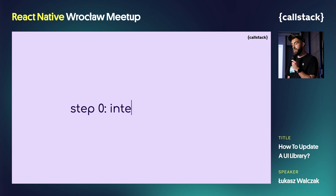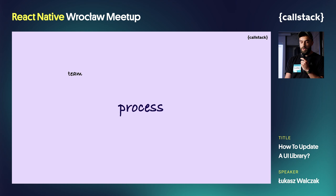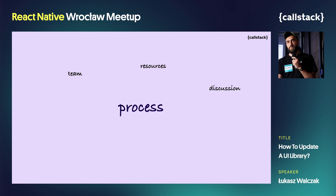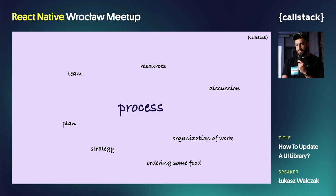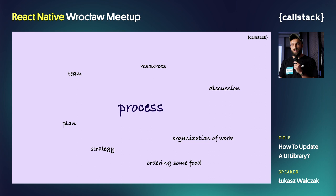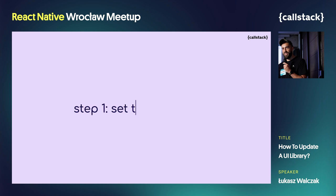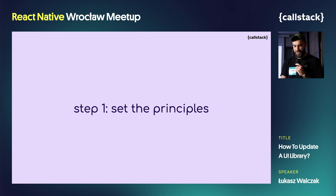Everything started at an internal workshop where, with the team, based on available resources like new documentation and a Figma kit, we were able to discuss the component changes, plan and organize the work, and prepare the process strategy. We also ordered some food from Uber Eats, because we think better on a full stomach. By the way, if there is someone from Bolt, Glovo, or another app, you can contact me — next time it can be your advert. Just kidding, but Uber Eats didn't sponsor us.